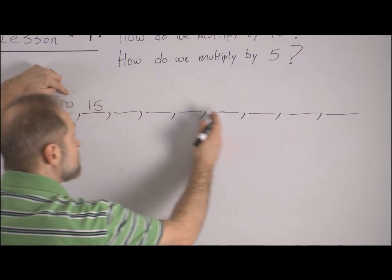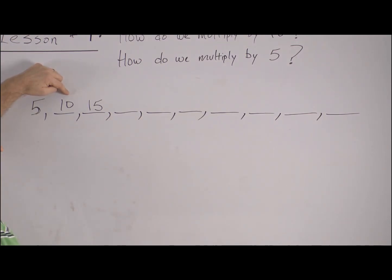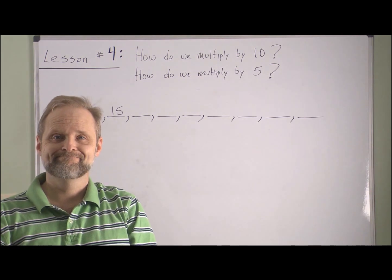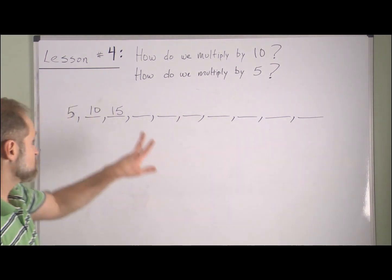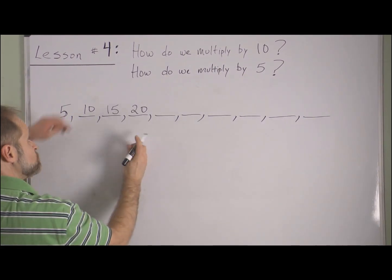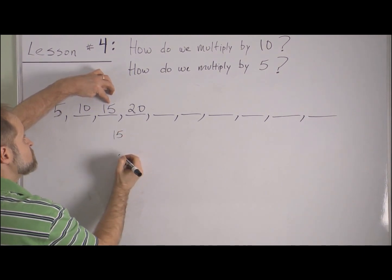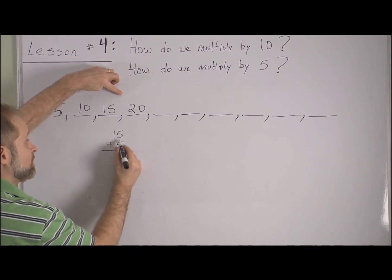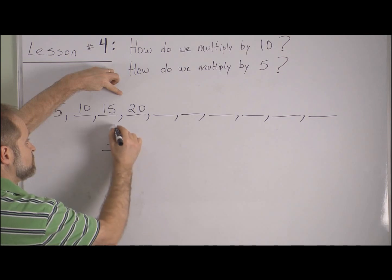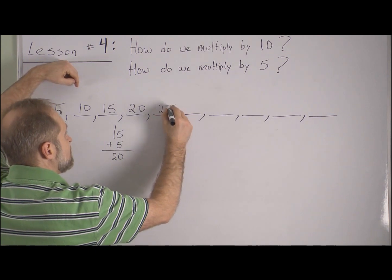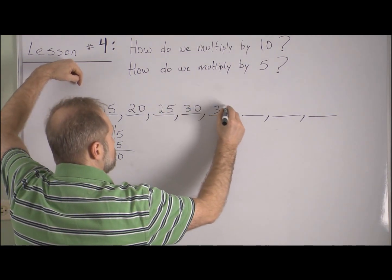I want you to go ahead and quickly fill in the rest on your own, then I'll fill those in and see how you did. So please pause. After fifteen: fifteen plus five is twenty. If you got stuck, you can write out the addition — five plus five is ten, carry the one, giving twenty. Then twenty-five, thirty, all the way to the end.